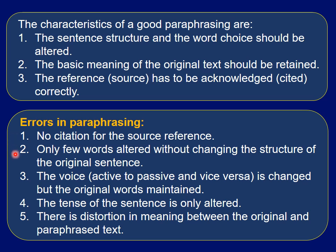Errors in paraphrasing could include: first, no citation for the source or reference; second, only a few words altered without changing the structure of the original sentence — this can be detected by plagiarism software; third, only the voice is changed — active to passive or vice versa — while the original words are maintained, which is also plagiarism; fourth, only the tense of the sentence is altered without changing the words; and fifth, there is distortion in the meaning between the original and the paraphrase, which is completely wrong.